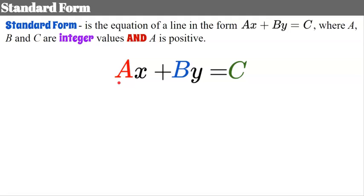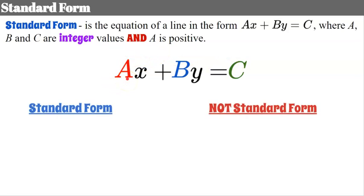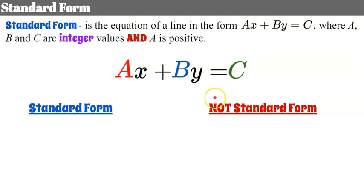So to be in standard form, a, b, and c cannot be decimals or fractions, and a must be positive. Let's look at some examples that are in standard form and some that are not, to fully understand standard form.